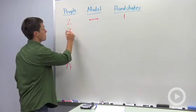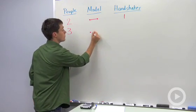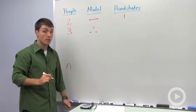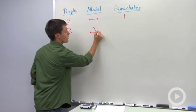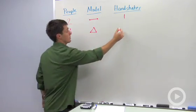Let's say you had three people. The mathematical model there would be one, two, three people, and there would be three handshakes. So, three people, three handshakes.